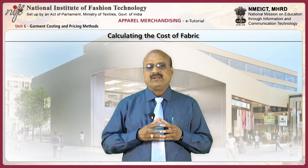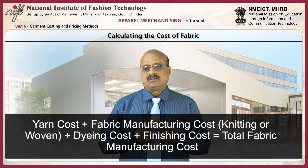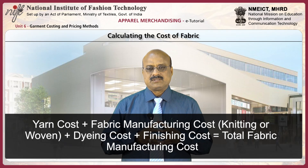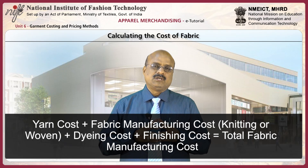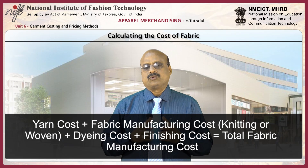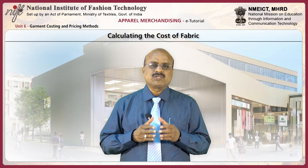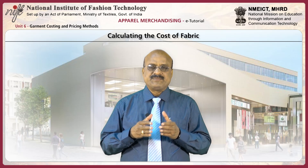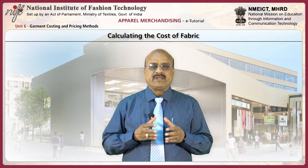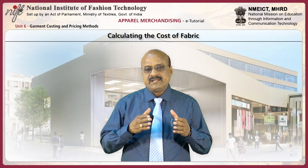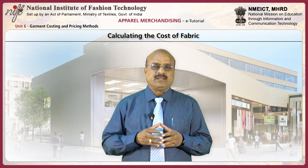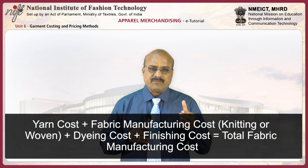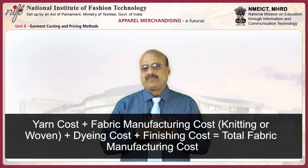The cost of fabric can be calculated as follows: yarn cost plus fabric manufacturing cost — which may be knitting or weaving — plus dyeing cost plus finishing cost, giving the total fabric manufacturing cost. Dyeing cost indicates whether the fabric is yarn dyed, fiber dyed, or piece dyed. The finishing cost includes heat setting, normal finishing, and compacting in case of knits. Fabric cost in a garment equals the rate of fabric multiplied by the consumption of fabric in the garment.